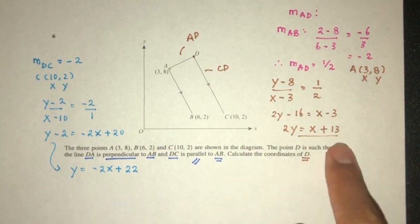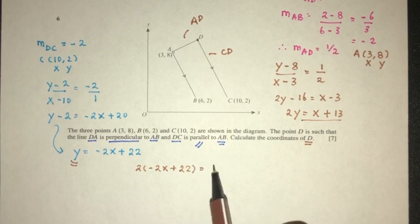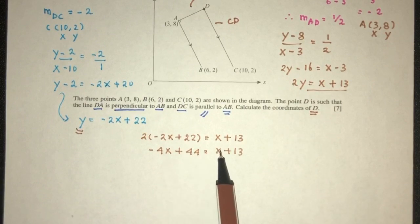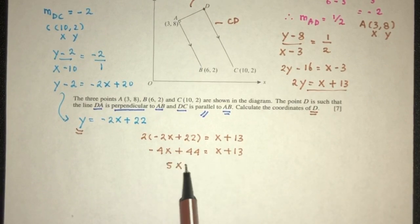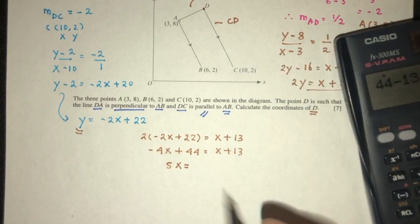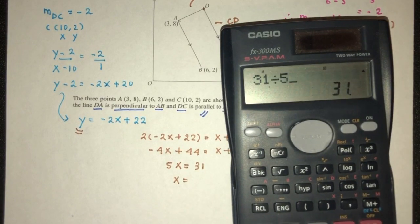Pretty simple. We have this and this, we just have to solve them simultaneously to find the point D. Here we have Y, we can replace directly. You have 2 times Y, which is this value, X plus 13. That will be minus 4X plus 44 equals X plus 13. Send this over here, you will have 5X. 44 minus 13, that should be 31. X will be 31 divided by 5, that will be 6.2.